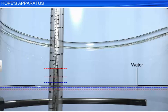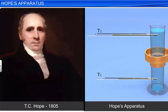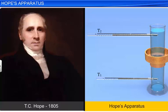The special behavior of water between 0 degree Celsius and 4 degree Celsius is called the anomalous behavior of water. In the year 1805, the scientist T.C. Hope devised a simple arrangement known as Hope's Apparatus to demonstrate the anomalous behavior of water.